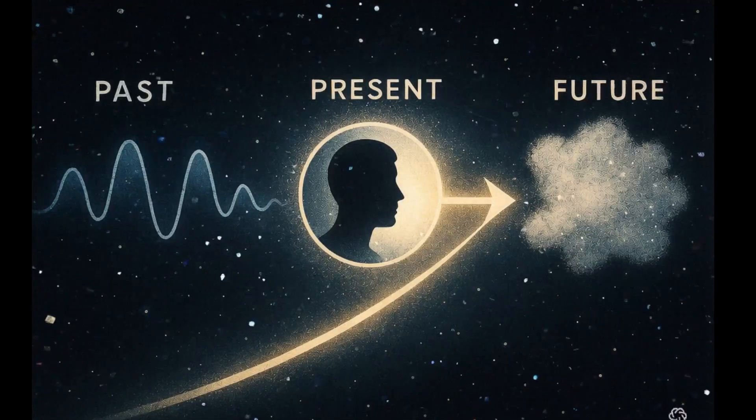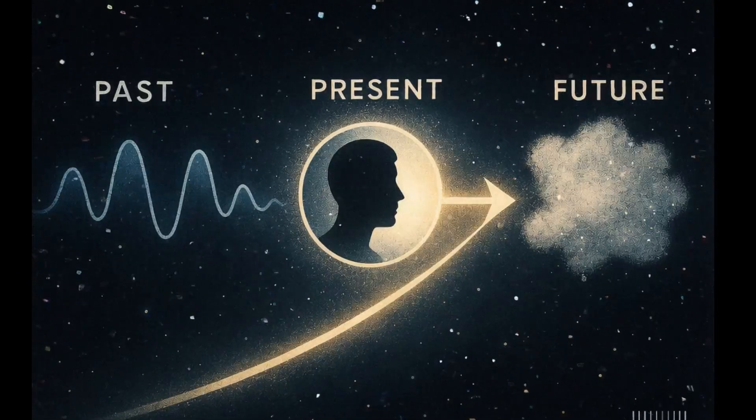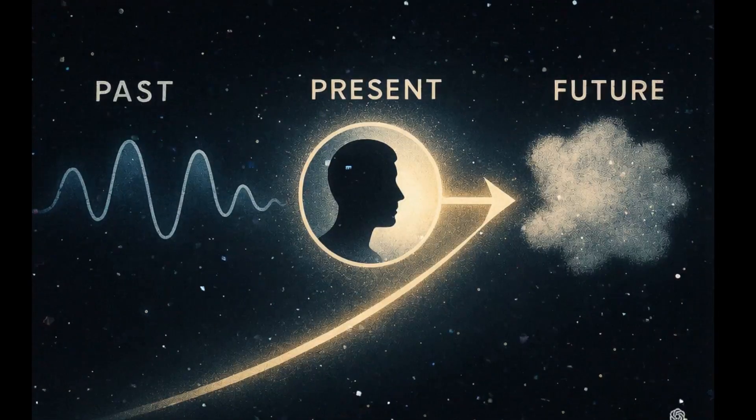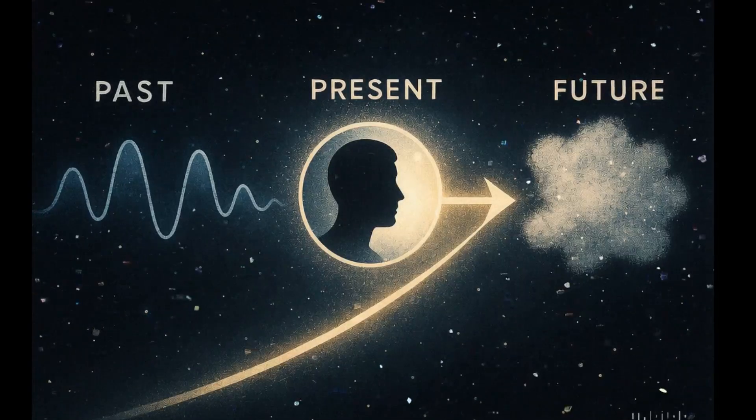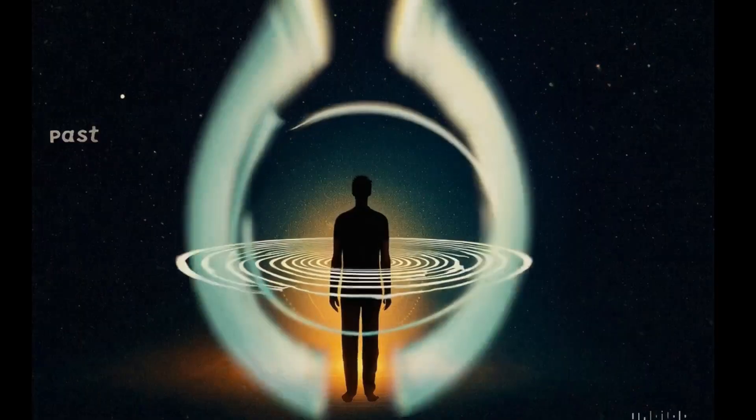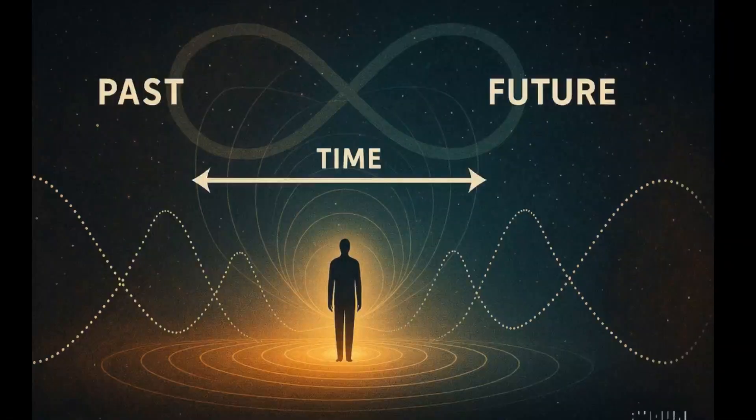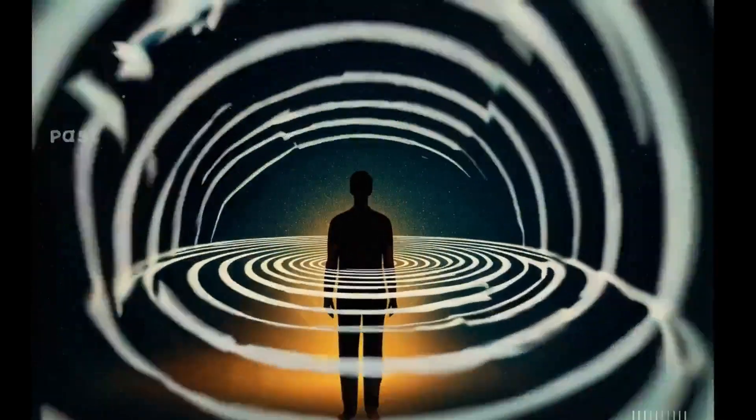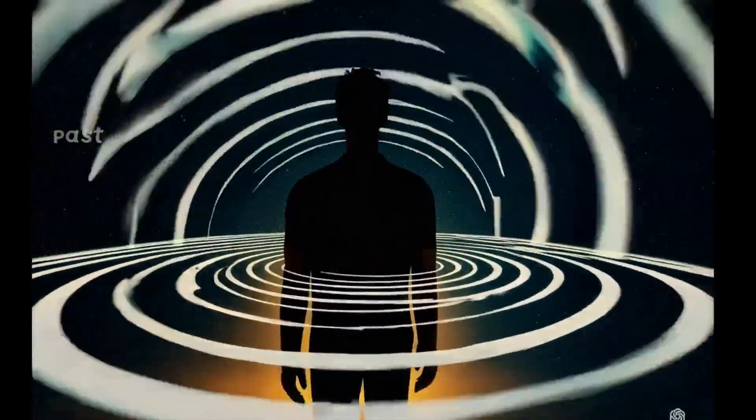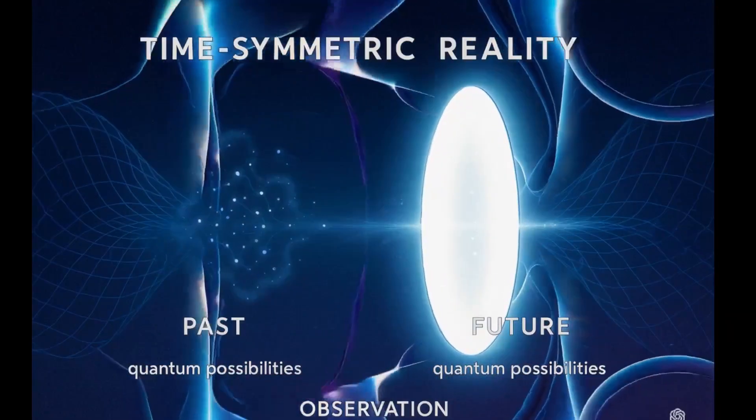This paradox leads to a profound conclusion. Quantum mechanics imposes uncertainty not only on the future, but also on the past. Even history, it turns out, is subject to the same quantum limitations of measurement and interaction. If we strip away any special assumptions about observation, memory, or consciousness, we find that both past and future are merely potentialities, unrealized possibilities, that only become actual through observation.